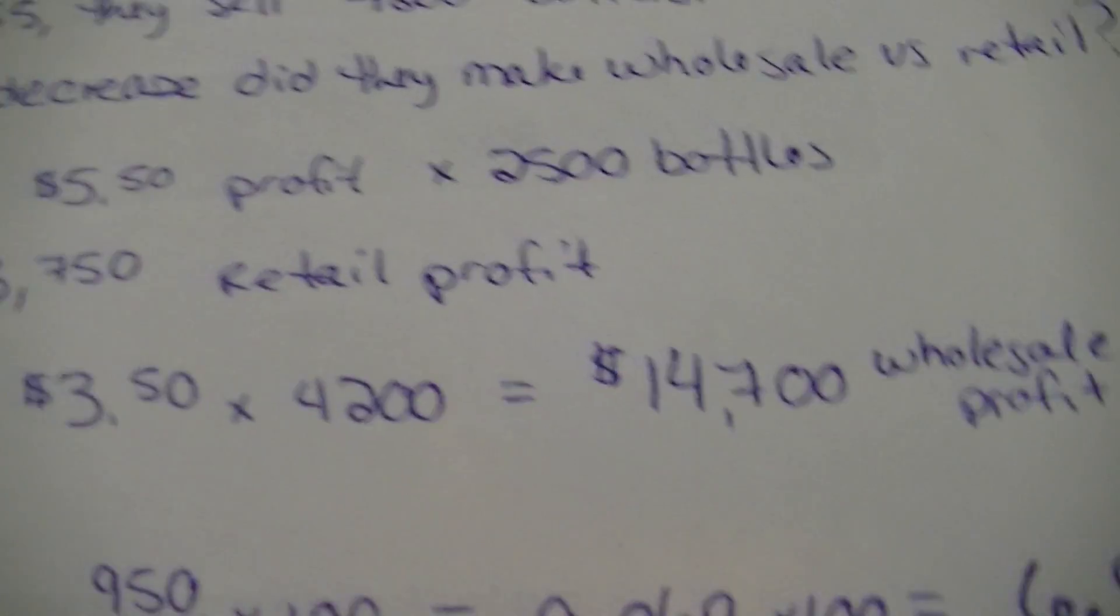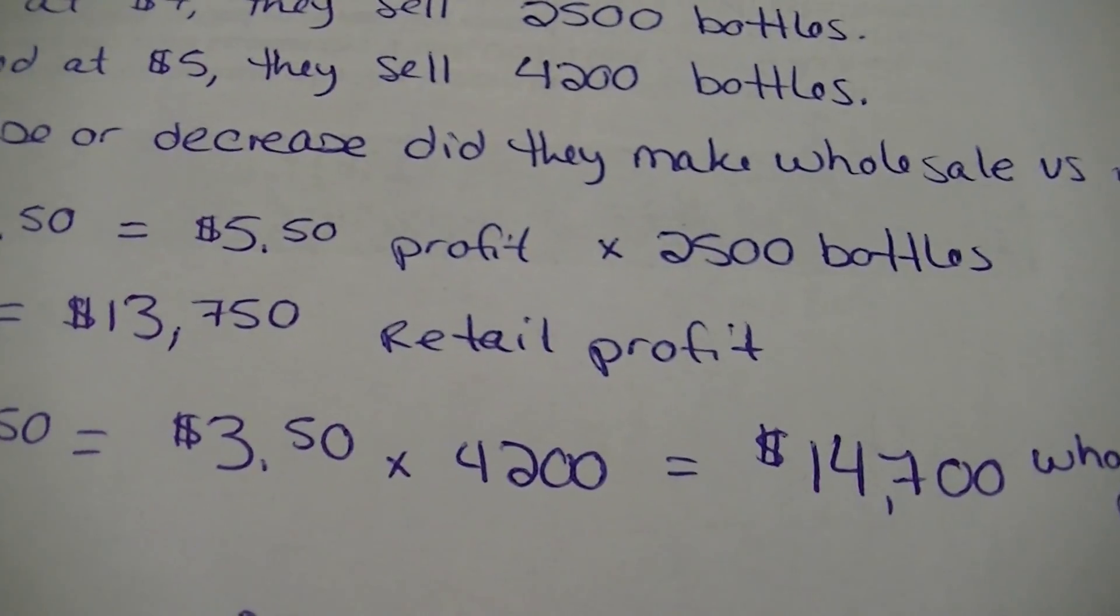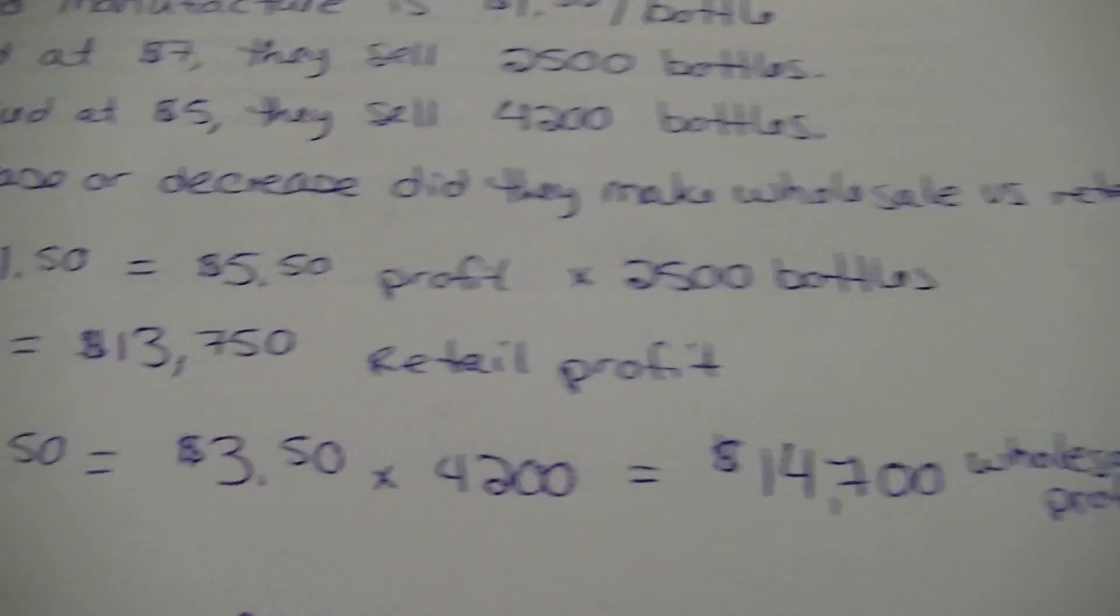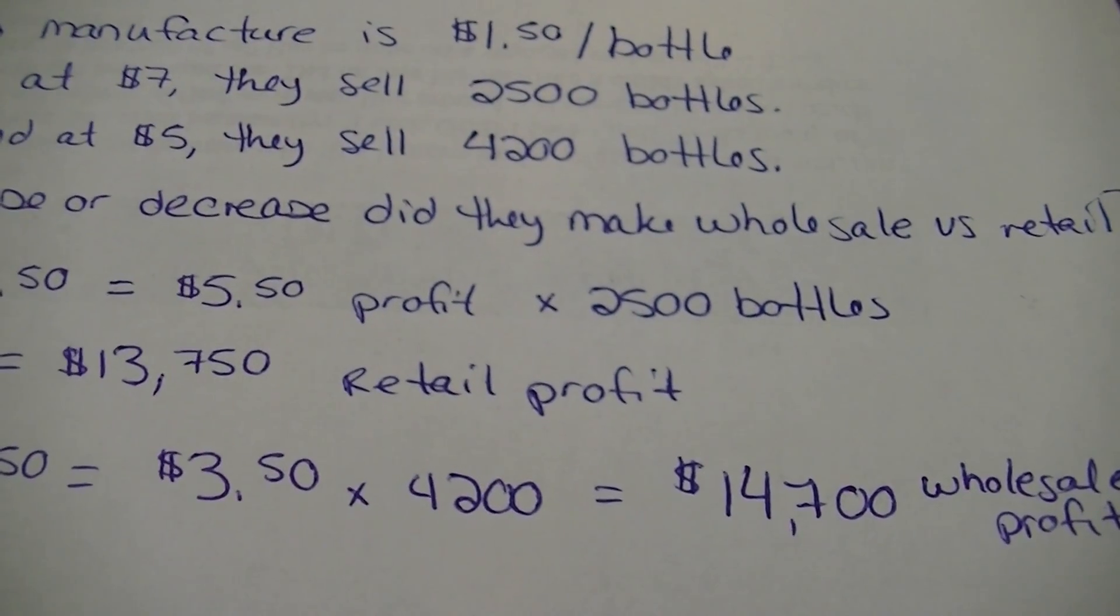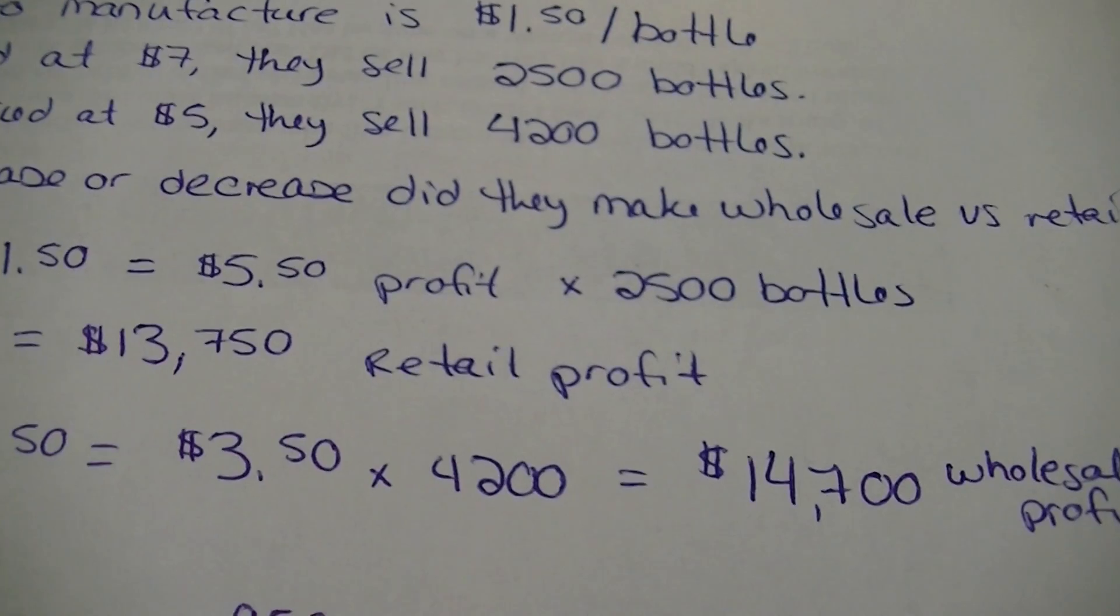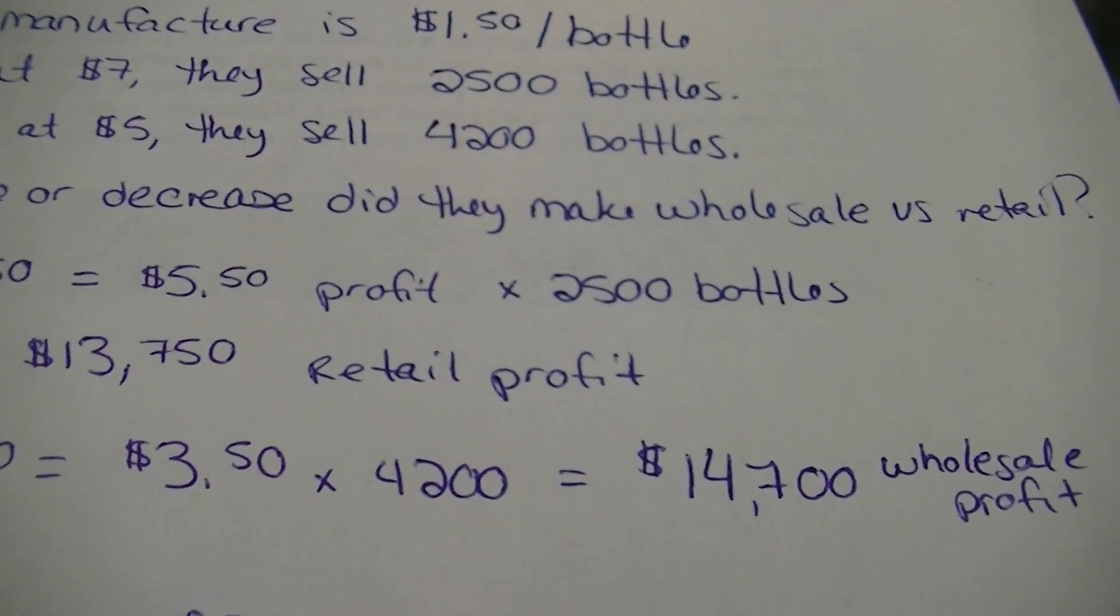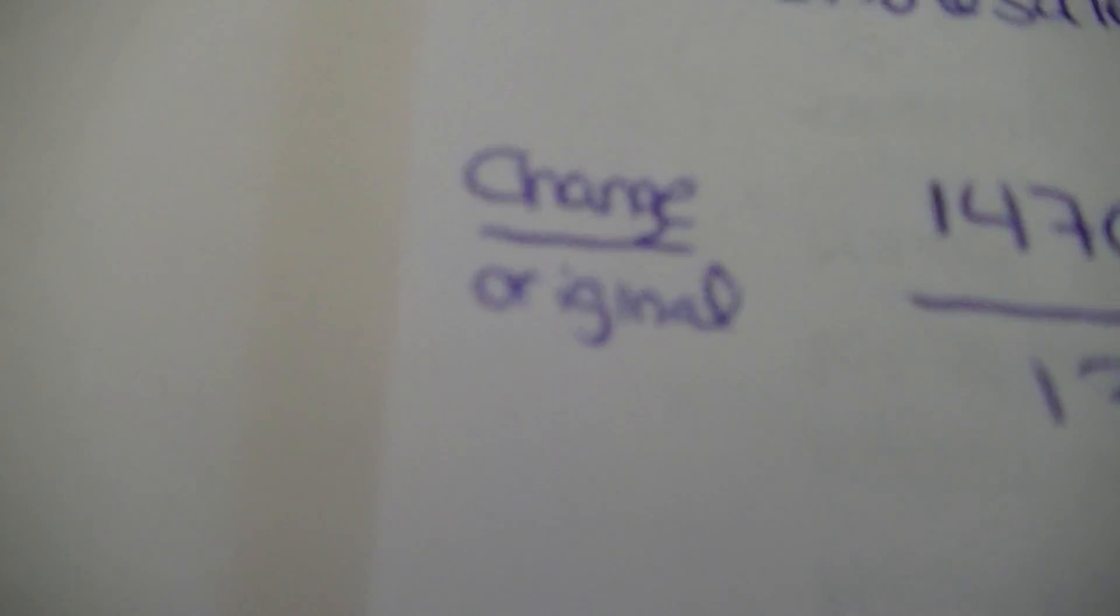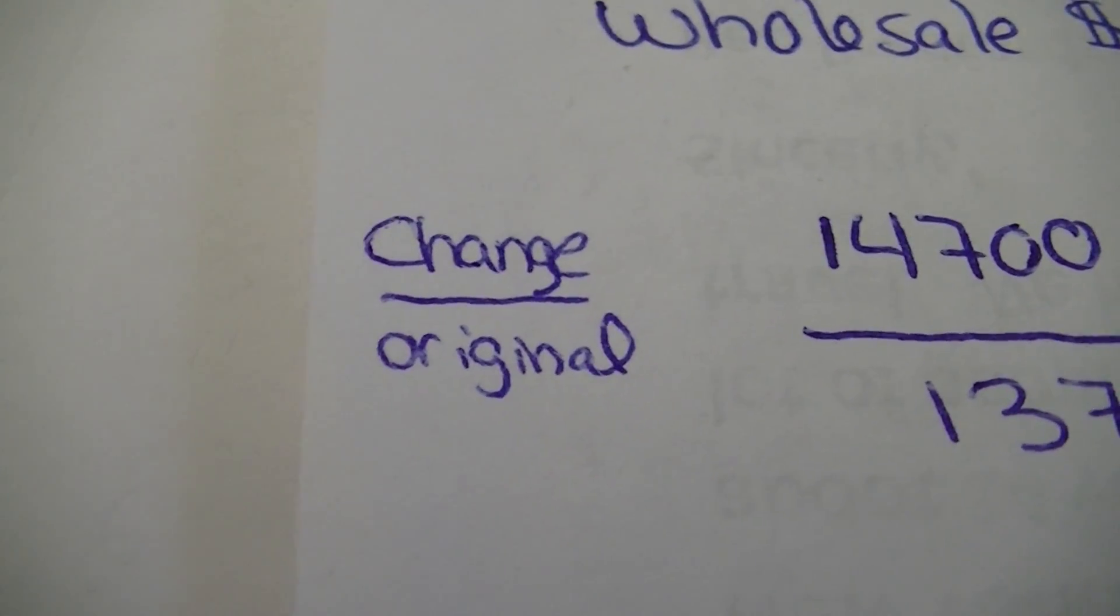So let's first ask ourselves, are we going up or down? Okay. That's what determines if it's an increase or decrease. So from retail to wholesale, we are increasing, right? So we went from $13,750 to $14,700. So there is an increase there. Okay. So what percent increase? That's what we're going to find. Now, to find percent increase, big thing we got to remember, change over original.